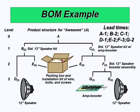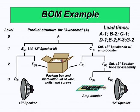Keep in mind the concept of low-level coding. The low-level code of A is 0, so that will be the first item that you plan. The low-level codes for B and C are both 1 because they appear only once in level 1. Level 2 has E and F, and level 3 has D and G.